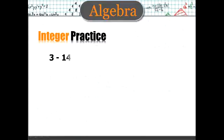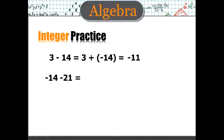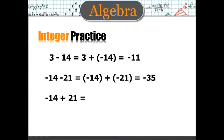Integer practice. Let's look at some examples here. 3 minus 14 is the same as 3 plus negative 14, which is negative 11. And negative 14 minus 21 is negative 14 plus negative 21, which is negative 35. And then we have negative 14 plus 21, which is 7. Now, take a moment and look those over. Go back and go through them again. Or, ask your teacher for some practice problems.